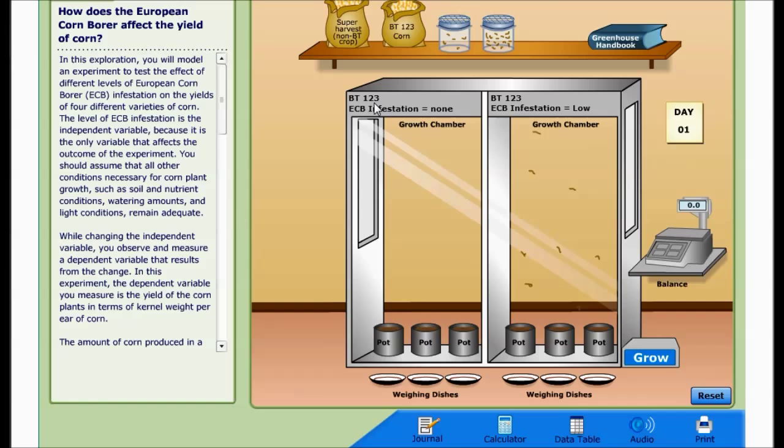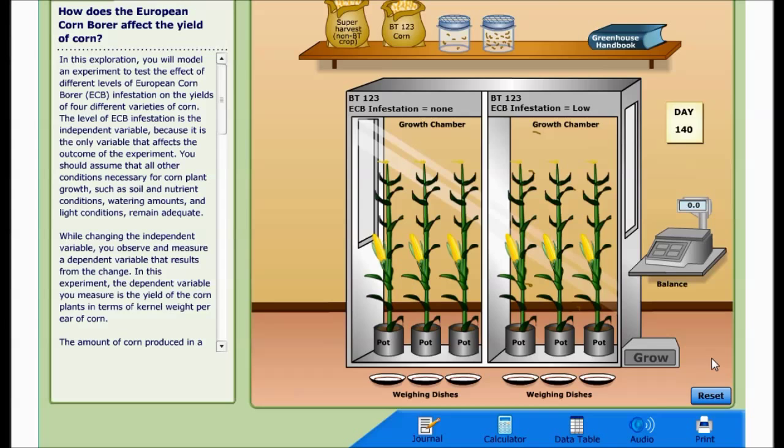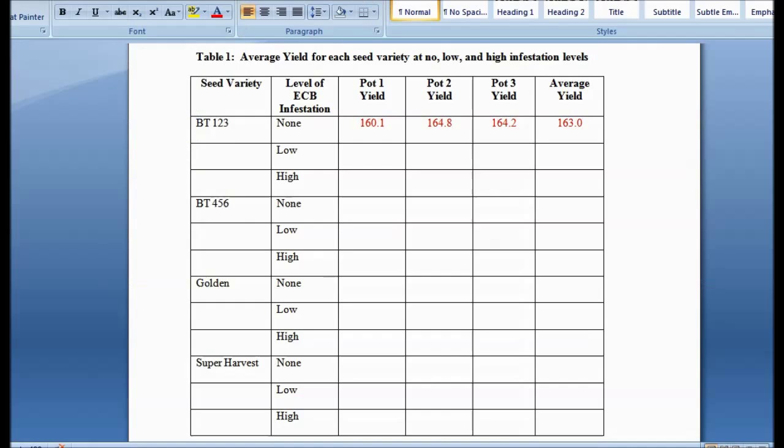And time goes fast. Alright, we're done. Takes 140 days. And so now we want to weigh these out. Each one of them, each pot, we weigh separately. So we drag this yield down there. We drag the middle one down to the middle weighing dish. And we've dragged the last one down. And we do the same for this side, and this, and this. So now we have the corn, all the yield, in our weighing dishes. So we need to know how much they weigh. Take them over to the scale or the balance. And the first one is 160.1.